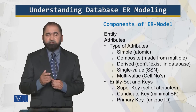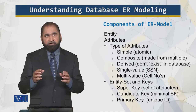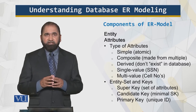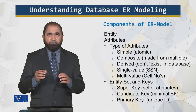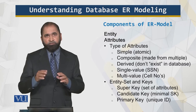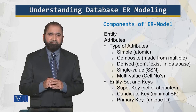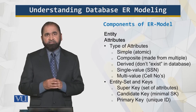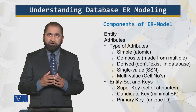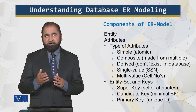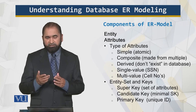We have the simple attribute, or the atomic attribute. It means that if you break the attribute and divide it into parts, it doesn't make any sense. Then there is the composite attribute, which is created by combining properties from multiple attributes. Then there is the single-valued attribute, such as the social security number or the NIC number. That attribute has a unique value — a person doesn't have two social security numbers or two ID numbers.